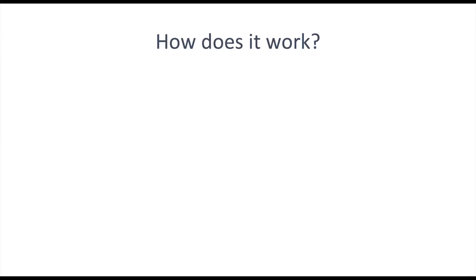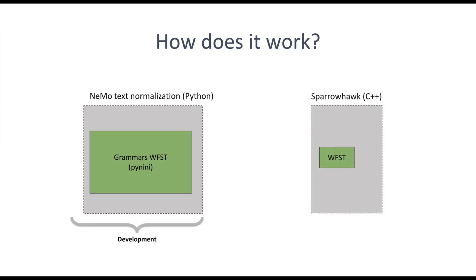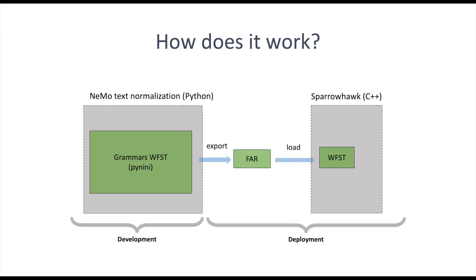NEMO text normalization offers a Python environment for developers to easily adjust and create grammars for their research purposes. This framework can also directly run and evaluate the Python system. The Python framework has a similar design to Sparrowhawk, which keeps a placeholder for compiled grammars and loads them for execution. The benefit of this design is you'll be able to export the grammars created in NEMO text normalization into an OpenFST finite state archive file and directly drop them into Sparrowhawk for production use with much lower latency.